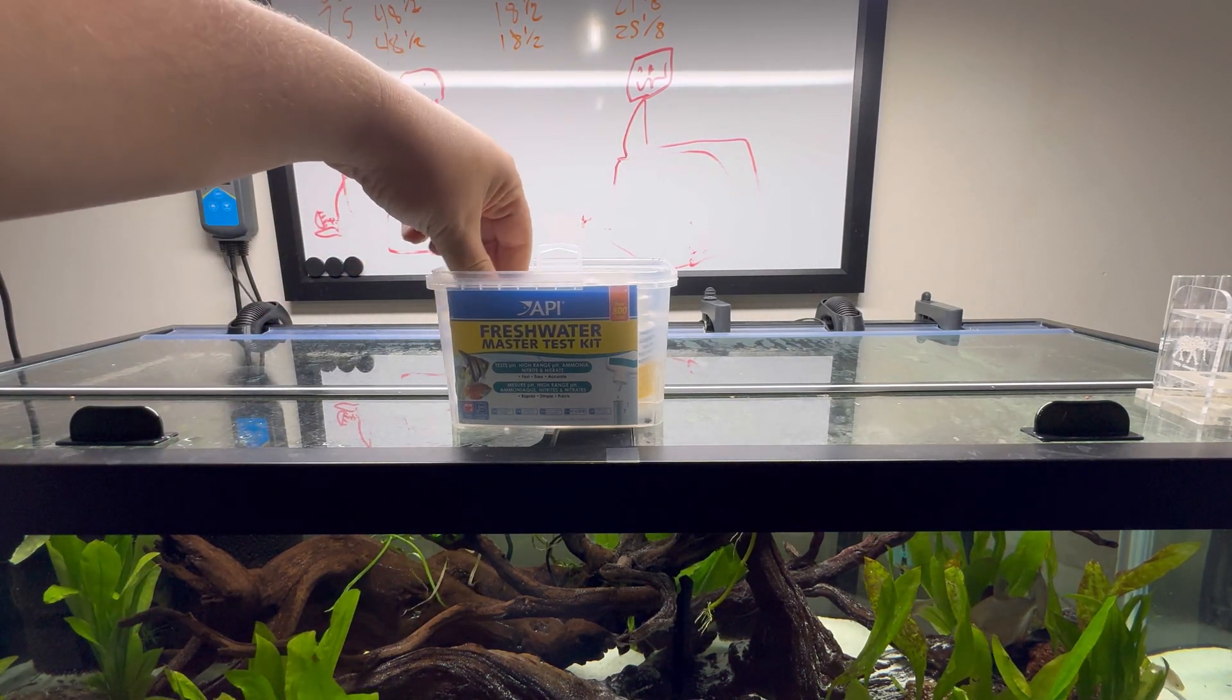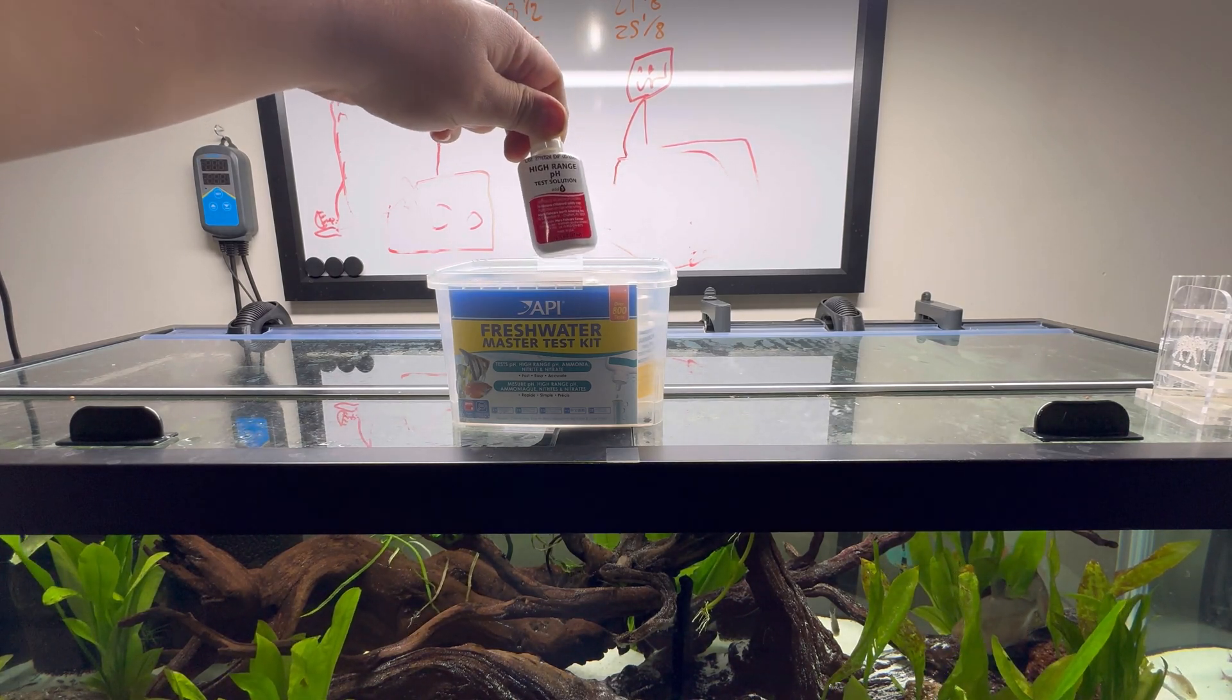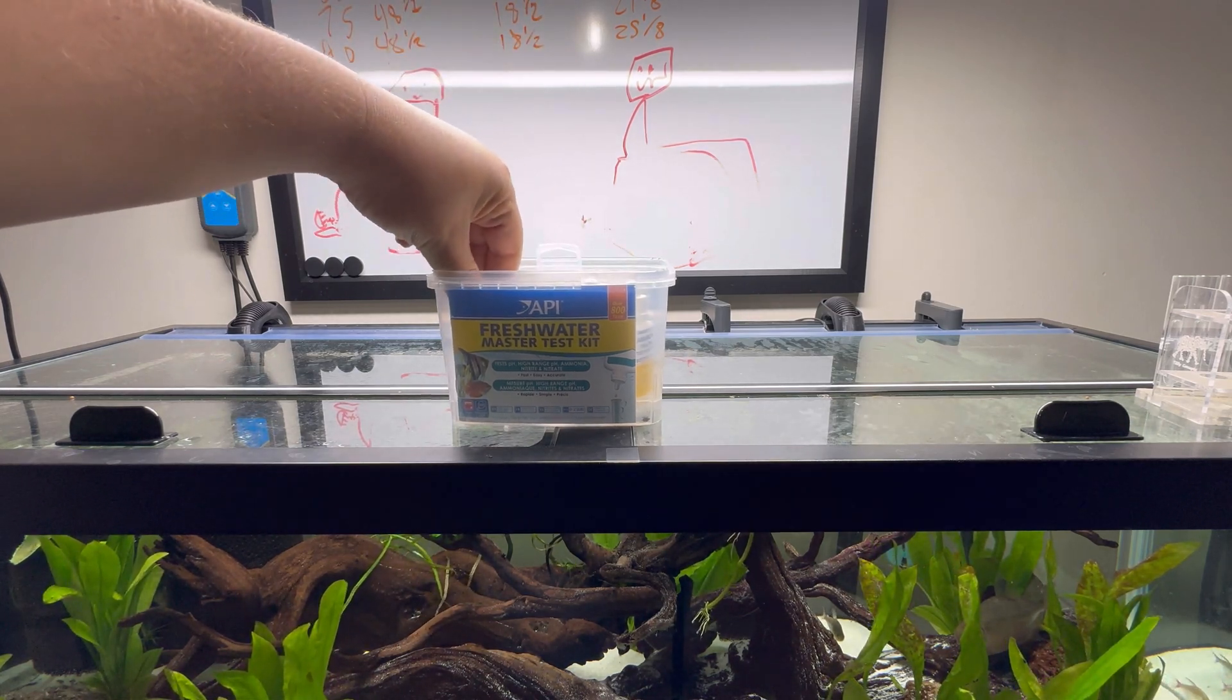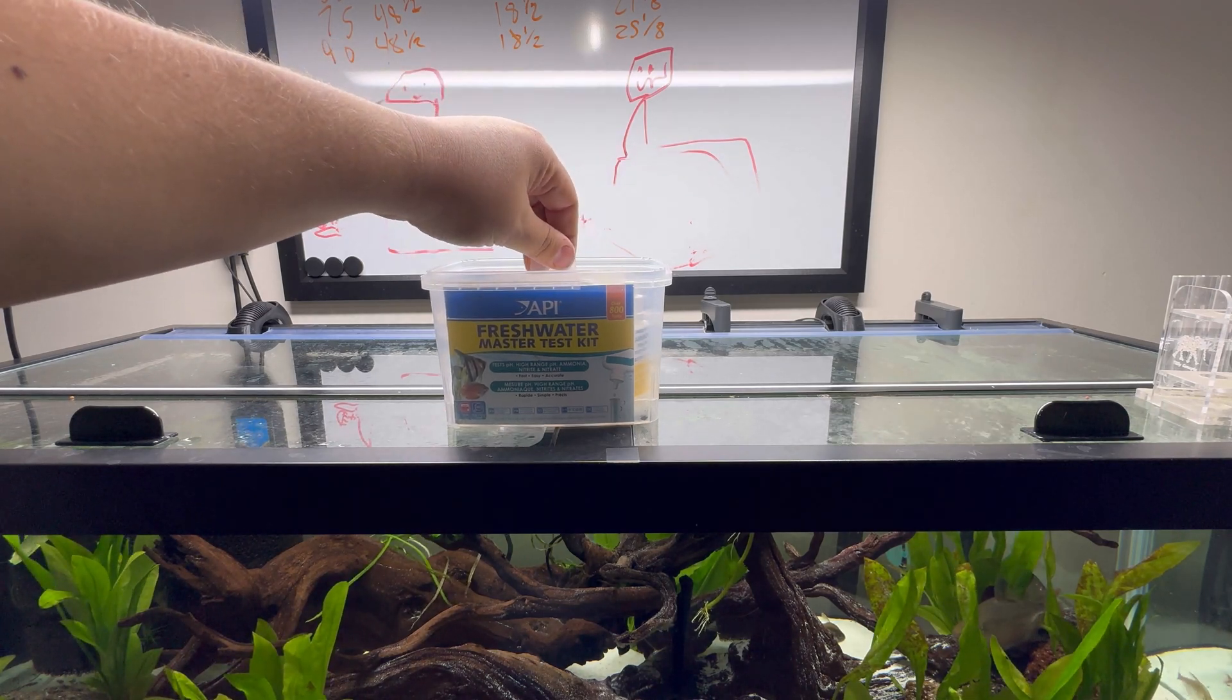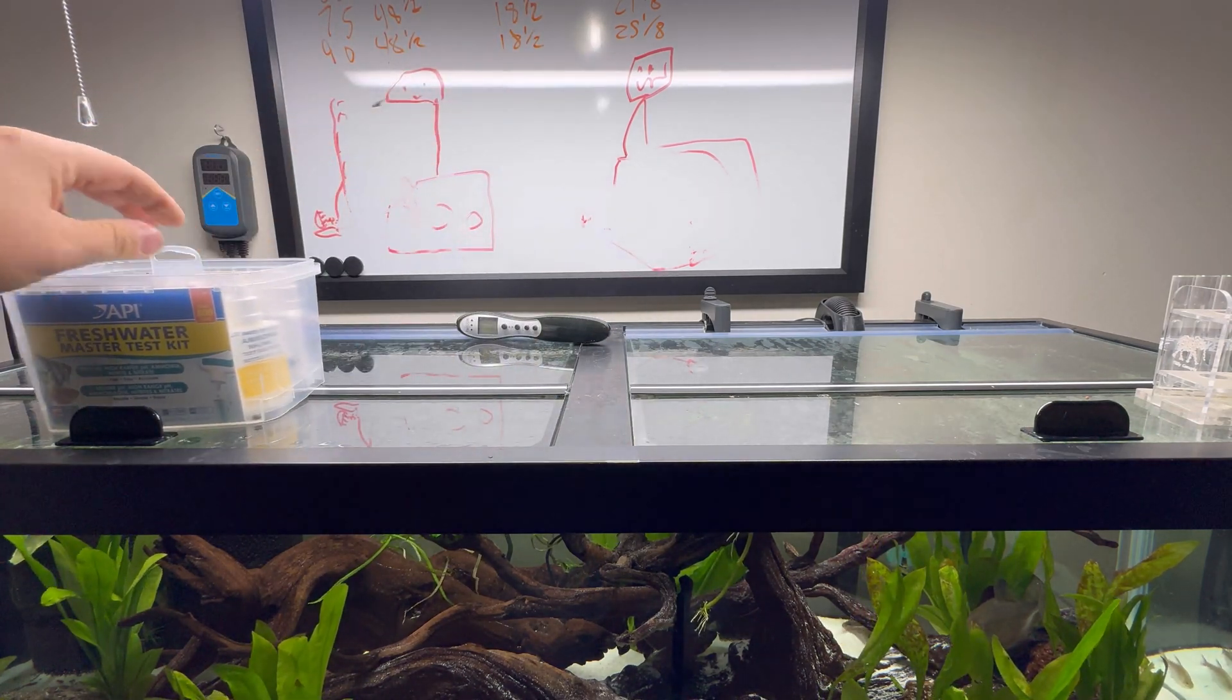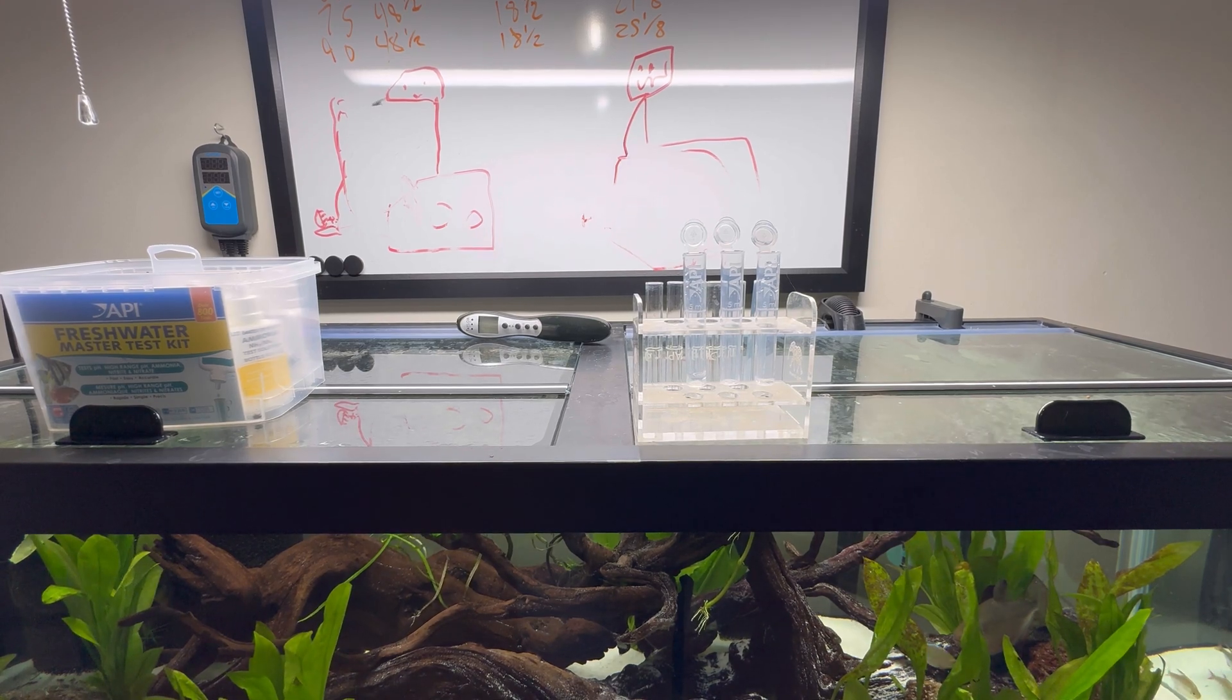First things first, we're not going to use the pH test just for the sake of the video. It's super simple: add five milliliters to the tube, put in either five drops for the high range pH or three drops for your regular pH chemical, shake it up, read the result. We're going to skip that and jump right into the other three tests.